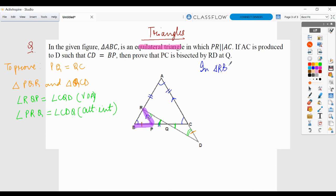So in triangle RBP, angle B is 60 degrees because it is an equilateral triangle. And angle C is 60. So angle P over here is also 60 by corresponding angles. These lines were parallel. So can I say angle R is also 60 degrees by angle sum property? Of course, yes.